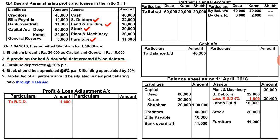Moving to the third adjustment about furniture. Furniture is depreciated by 20%. Furniture is 11,000, and 20% depreciation is 2,200. After deducting, furniture becomes 8,800 in the outer column. Since this is a loss for the firm, it is posted to the debit side of the profit and loss adjustment account as 2,200.